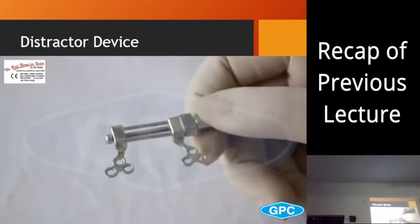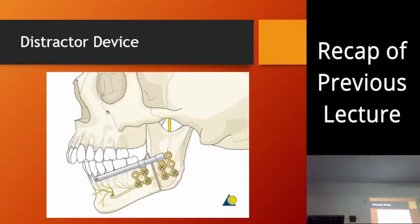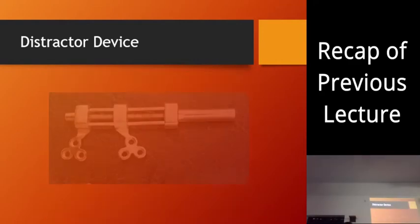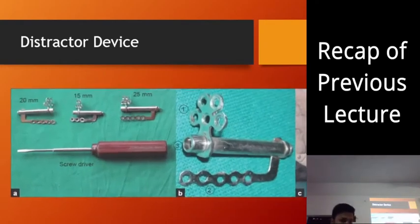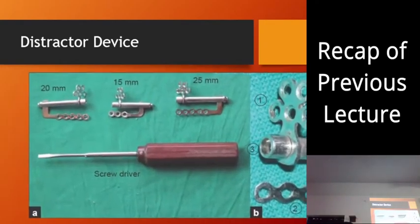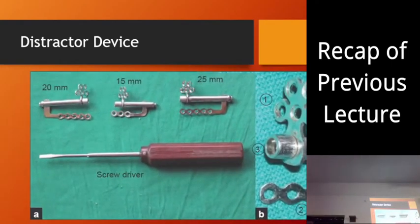This is your internal distractor device and this is how it is used. Once they are placed, we can activate using the activation arm and they are pulled apart. Depending on the site of distraction, there are different configurations and types of distractor device.